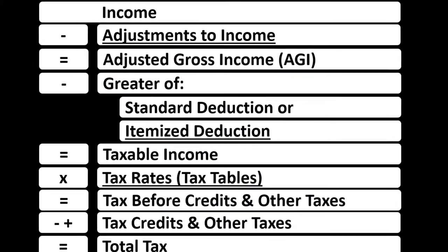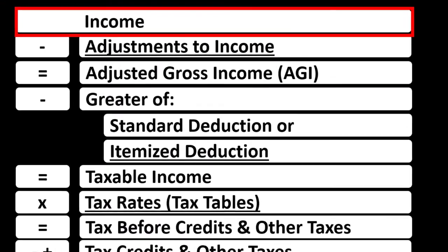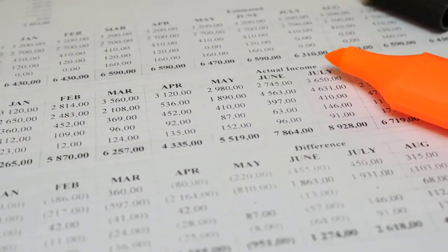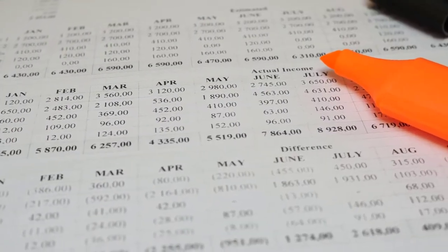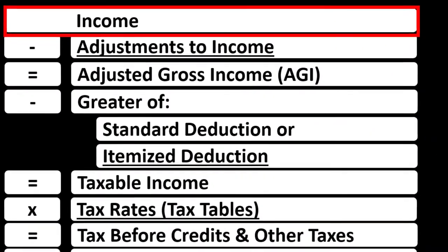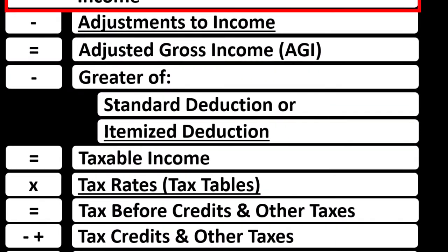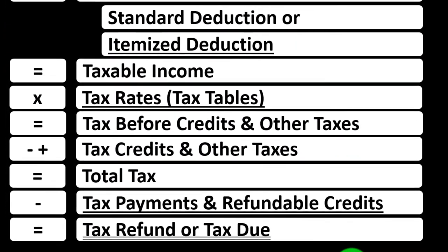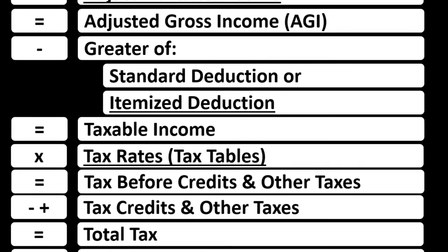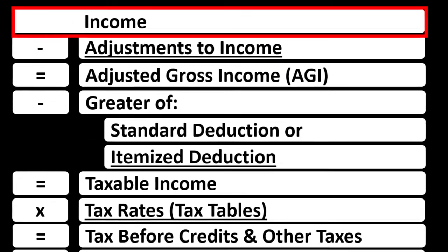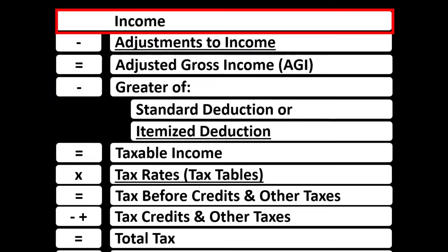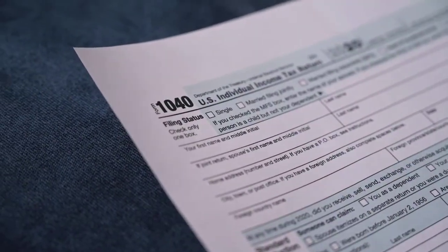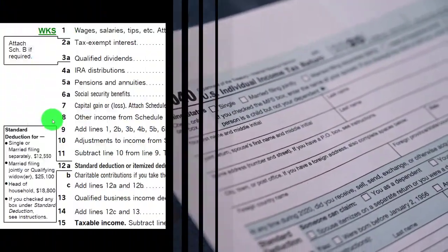Looking at the Income Tax Formula at Line 1, Income, which would have a subschedule — basically an income statement with income and expenses. We're focusing in on the expenses here, them basically being deductions. The net would then roll into Line 1, Income, of the Income Tax Formula, as well as Page 1 of the Form 1040.